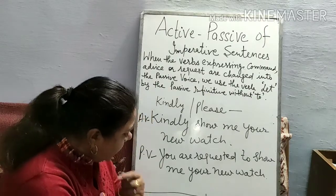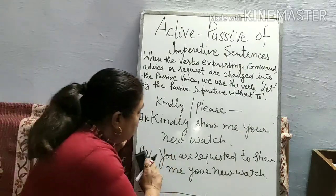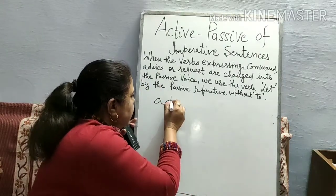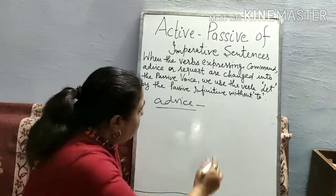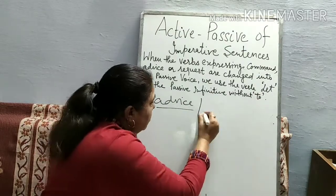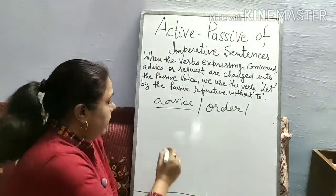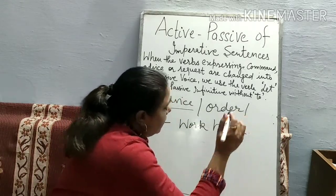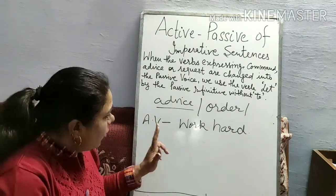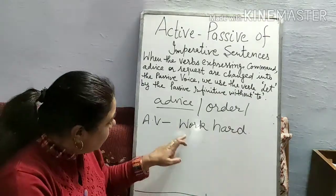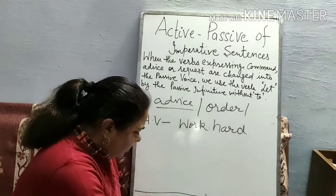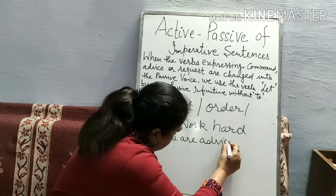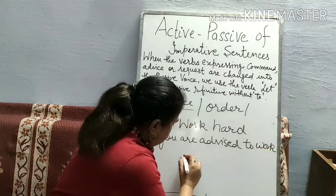Now the third type: when we give advice to another person, how do we change the imperative sentence? For advice sentences, active voice: 'Work hard.' The passive voice will be: 'You are advised to work hard.' We use 'you are advised to' — not 'requested' — because advice is being given.